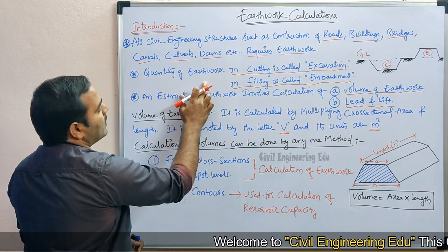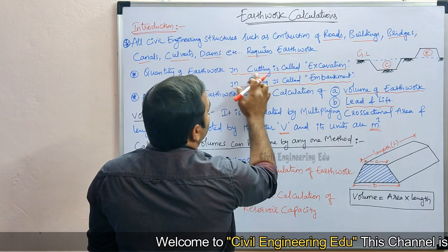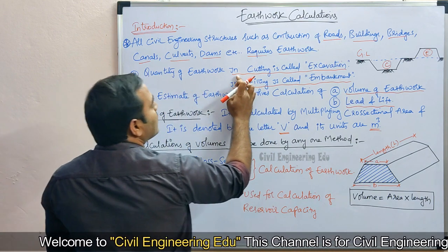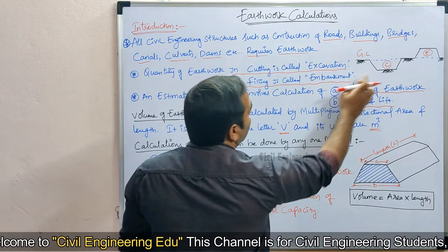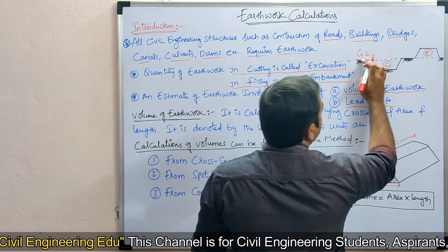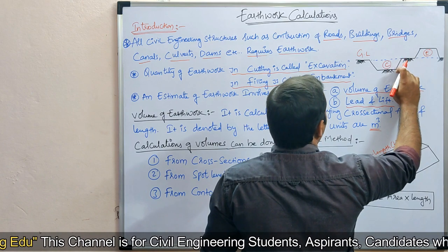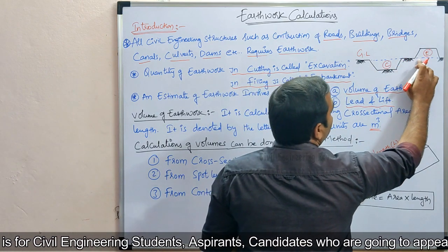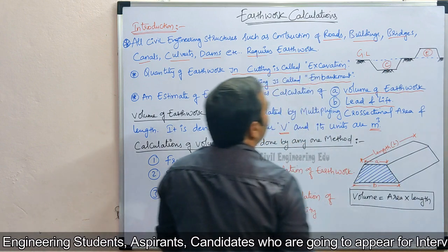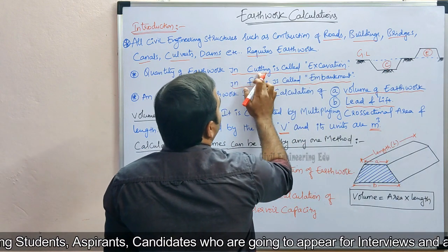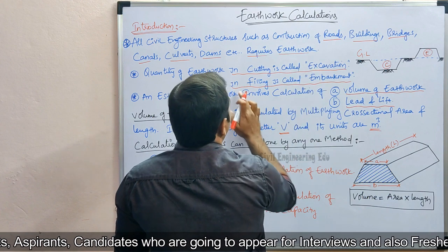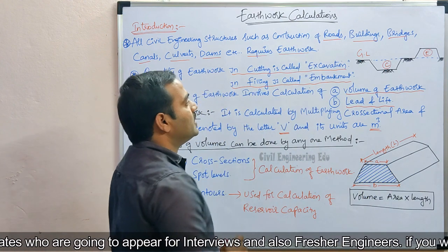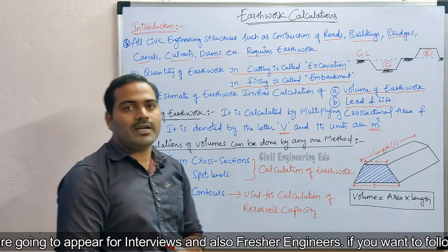To calculate the quantity of earthwork, it can be in cutting or it can be in filling. If the earthwork is done below the ground level, that is called cutting. If the earthwork is done above the ground level, that is called embankment. So earthwork in cutting is called excavation, and earthwork in filling is called embankment — these are the two important terms to understand first.